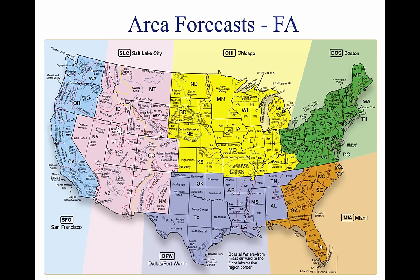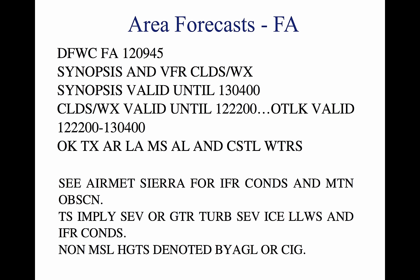The area forecast (FA) gives a picture of clouds, general weather conditions, and visual meteorological conditions expected over a large area encompassing several states. There are six areas for which area forecasts are published in the contiguous 48 states. Area forecasts are issued three times a day and are valid for 18 hours. They are disseminated in four sections: 1. Header — such as DFWC FA 120945 — giving the location identifier of the source, the date and time of issuance, the valid forecast time, and the area of coverage.